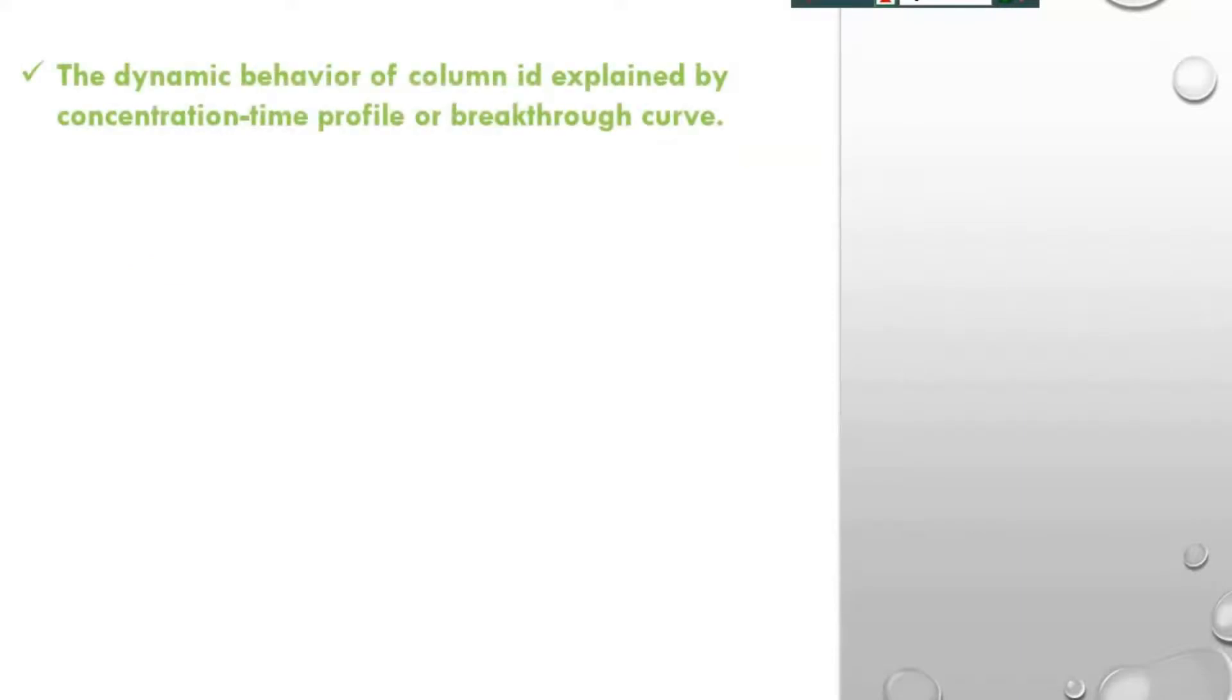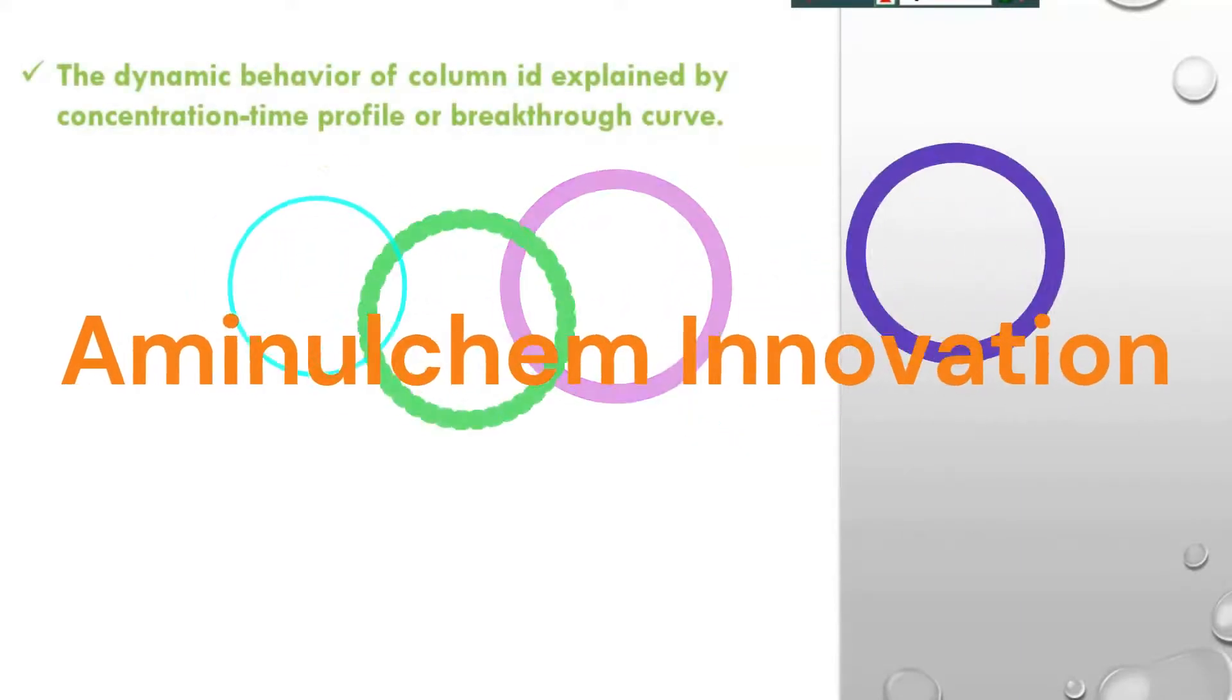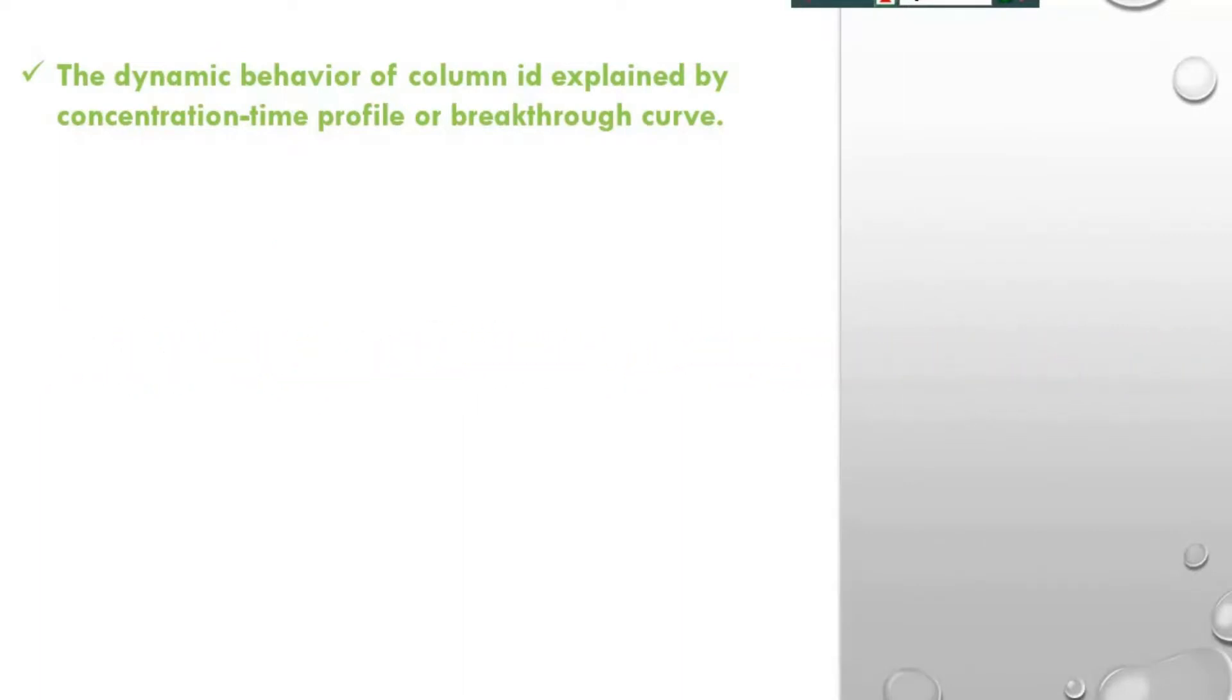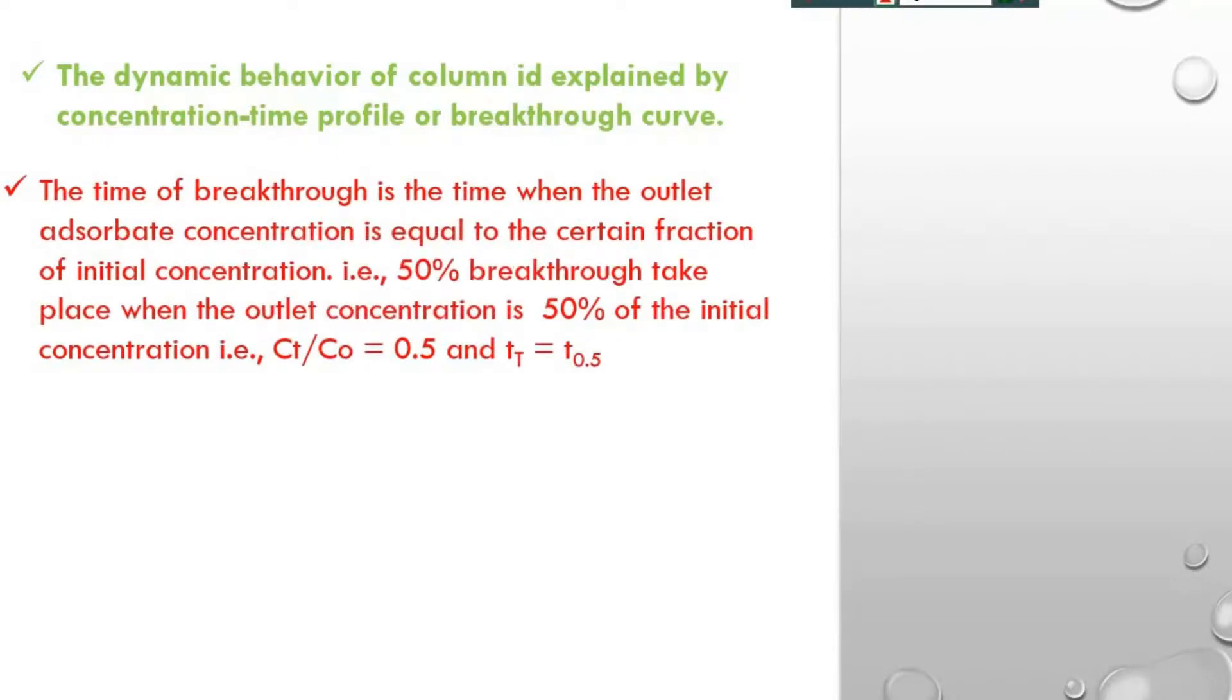Well, the dynamic behavior of column is explained by concentration-time profile or breakthrough curve. The time of breakthrough is the time when the outlet adsorbent concentration is equal to a certain fraction of initial concentration, i.e., 50% breakthrough takes place while the outlet concentration is 50% of the initial concentration, i.e., CT by C0 equal to 0.5 and CT equal to T0.5.